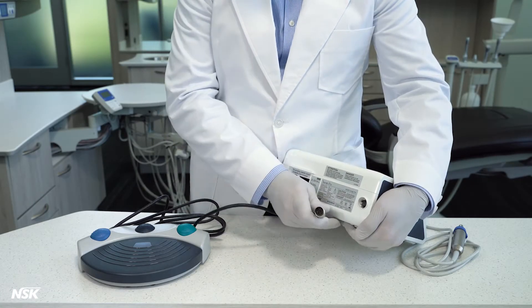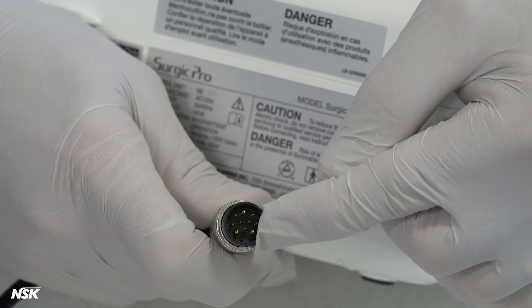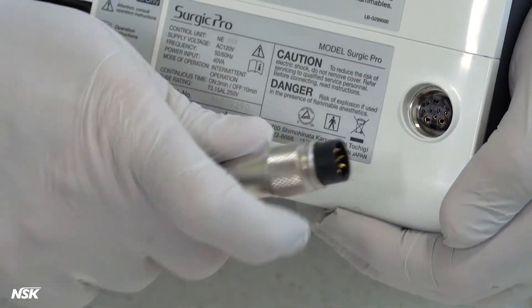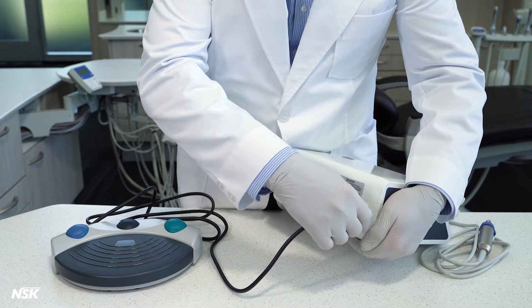Next, connect the foot control cord using the guide pin located at the bottom of the connector, which is at the back of the unit. Tighten the lock nut to screw and secure the connection.